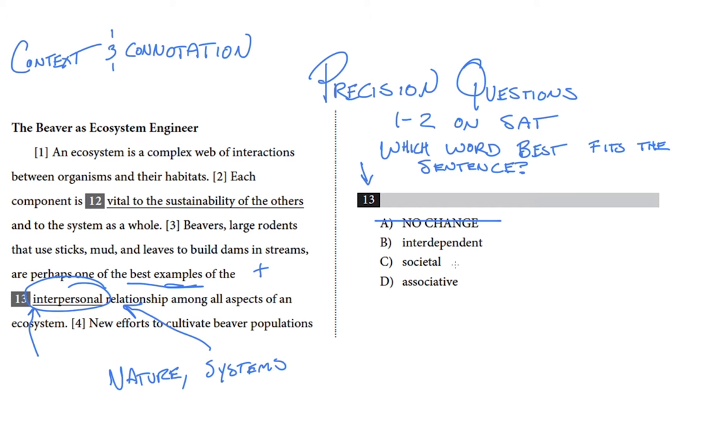The next choice, interdependent, doesn't have a people-y connotation or a negative connotation. And it could be used to talk about systems, and specifically natural systems. I like that choice. Let's leave it for now and see if the next one is better.